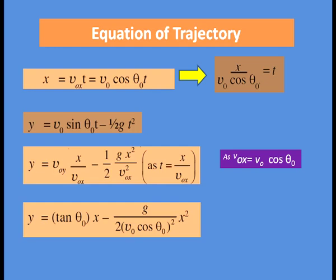In place of t we substitute x / Vox = x / (V0 cos θ₀), giving y = Voy · (x/Vox) − ½·g·x²/Vox². Now, since Voy/Vox = V0 sin θ₀ / (V0 cos θ₀) = tan θ₀, and in place of t² we put x²/Vox², the equation becomes y = tan θ₀ · x − g·x² / (2·V0² cos² θ₀). This is the equation of the trajectory.